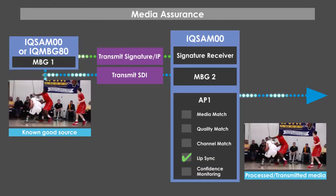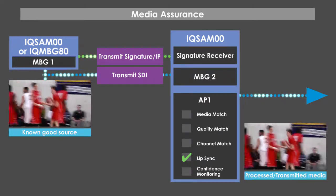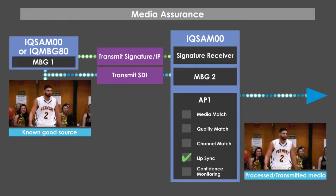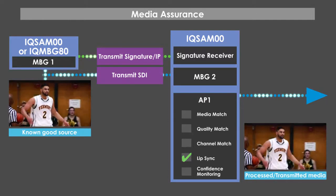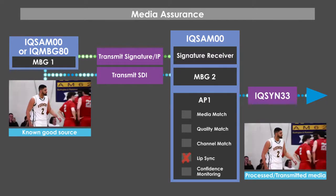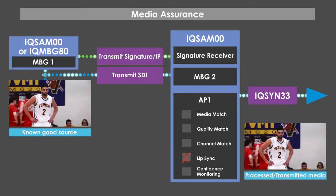In the second example, we are using two IQ SAM modules — one to generate a signature against the known good state, and transmit either via TCP/IP link or embedded in the SDI stream — so that the second IQ SAM00 module can compare the results, detect, report, and autocorrect the audio issue.